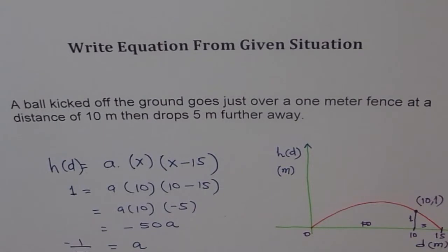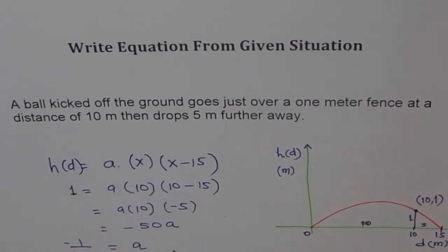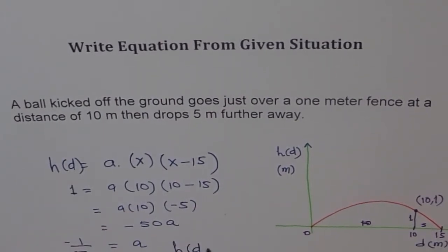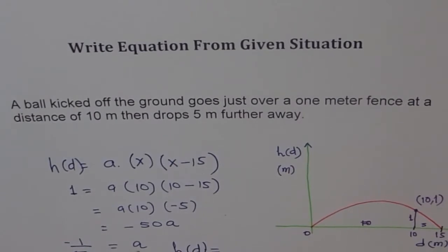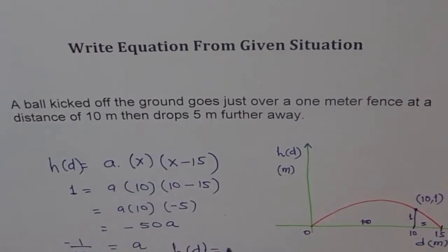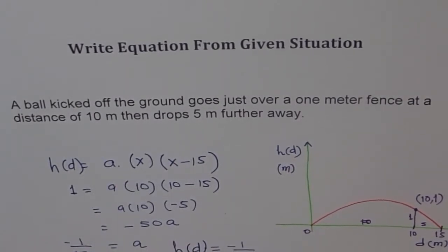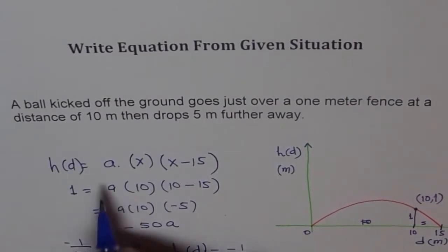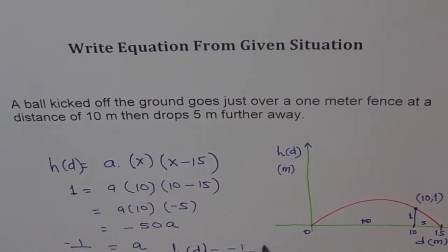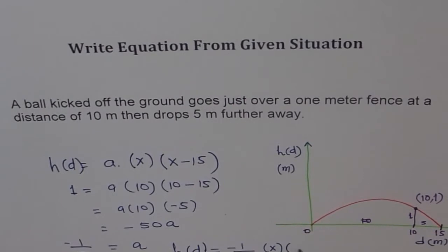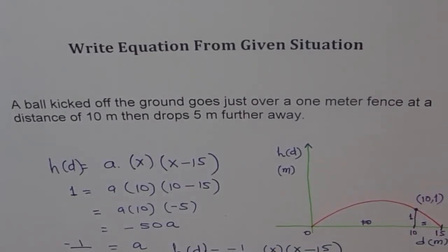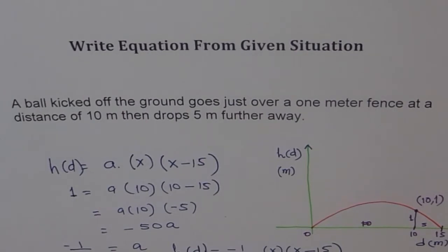Now if we know that, then we can write h(d) as, h(d) equals, I'll put as minus 1 over 50, this is for a, times x times x minus 15. Does it make sense? I think it does. And that is our equation.